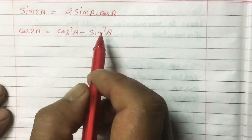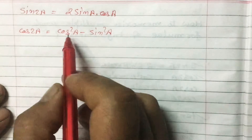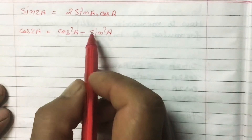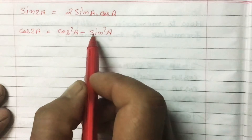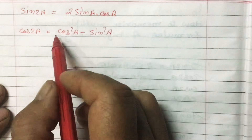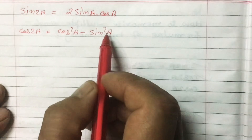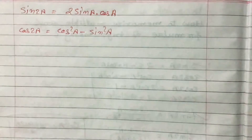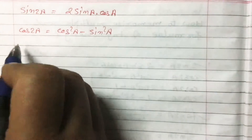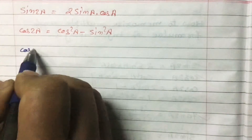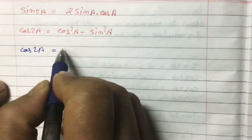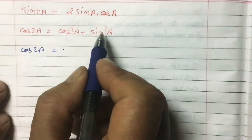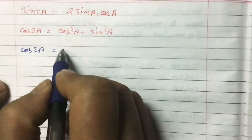Simply remember: cos comes before sin in the dictionary, so cos²A comes first. In the formula cos 2A = cos²A - sin²A, put 2 in front of cos and replace sin²A with 1, and you get another formula.